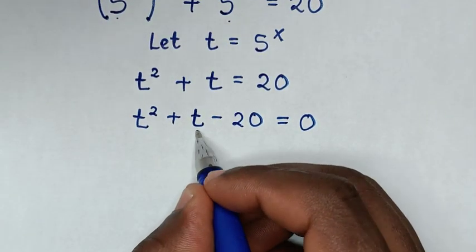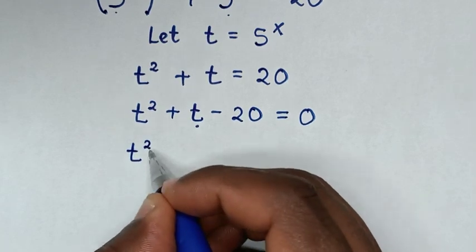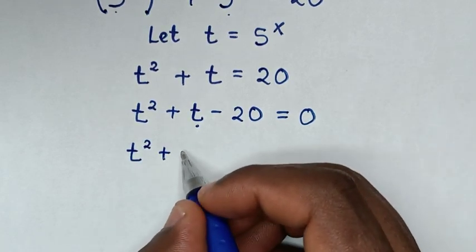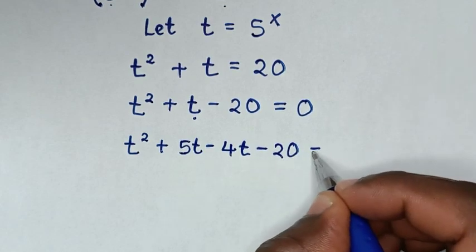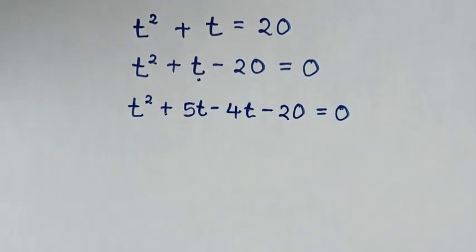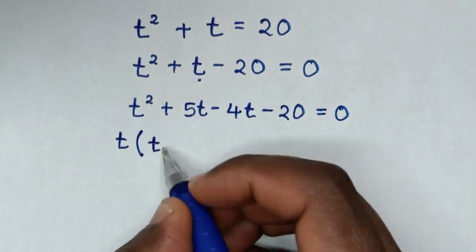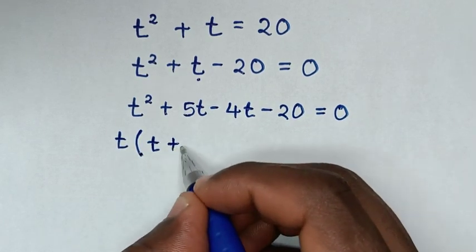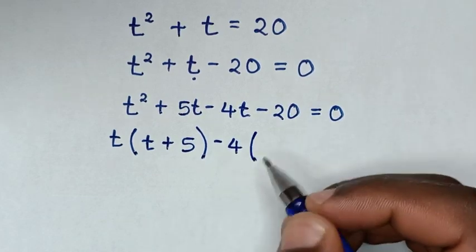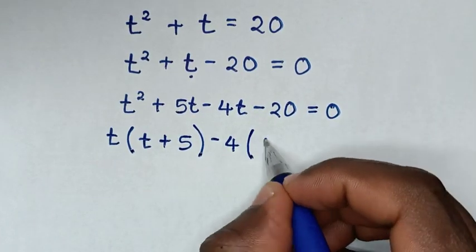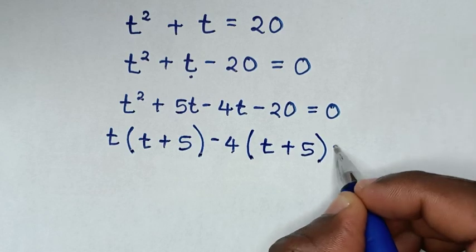From here, this t is the same as 5t minus 4t. So it will be t squared plus t, replaced with 5t minus 4t, then minus 20, is equal to 0. In here, t is common, so we'll take t out of the bracket: t squared divided by t is t, and 5t divided by t is plus 5, in bracket. Then, negative 4 is common, so we take negative 4 out of the bracket: negative 4t divided by negative 4 is t, and negative 20 divided by negative 4 is positive 5, in bracket, is equal to 0.